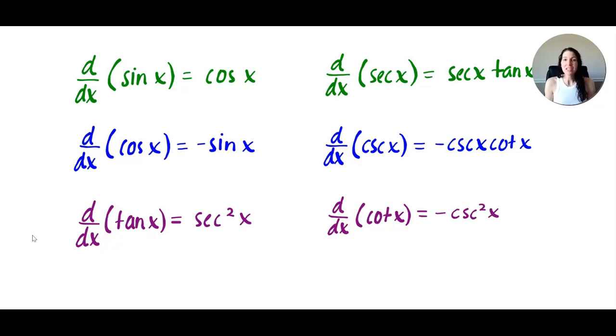One tip to remind you of is notice that all of the co-functions such as cosine, cosecant, and cotangent, those derivatives are going to be negative. So keep that in mind. And then the sine, the tangent, and the secant derivatives are all positive. That little tip may help you.